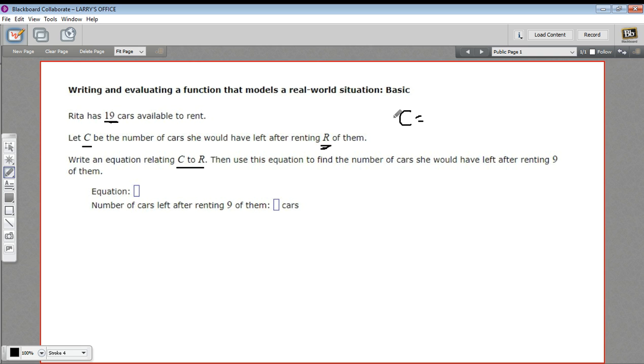That's what C is supposed to be, so I would put C is 19 minus however many cars have been rented, so minus the rented cars. That's our equation that relates C to R, so we can fill that in here: C equals 19 minus R.